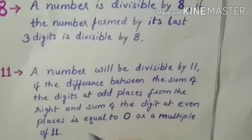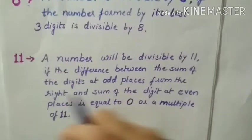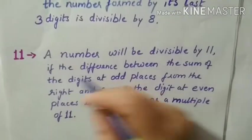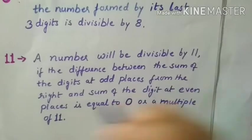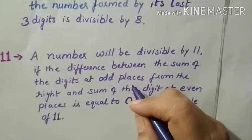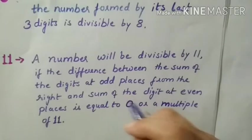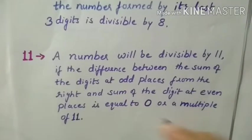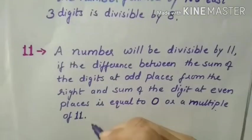And next I have explained you divisibility rule of 11. A number will be divisible by 11 if the difference between the sum of the digit at odd places from the right and sum of digit at the even places is equal to 0 or a multiple of 11.